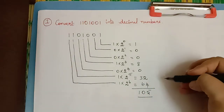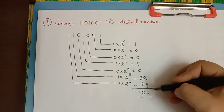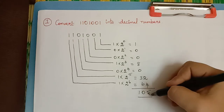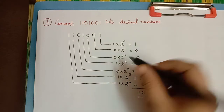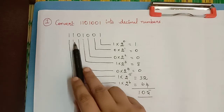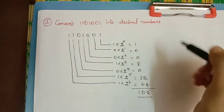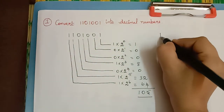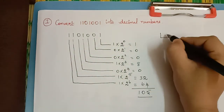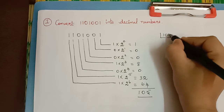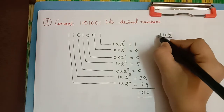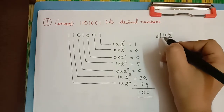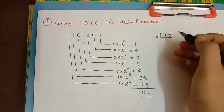Now we shall convert this decimal number back into a binary number, and we shall check whether we get the same binary number. So now let us take 105 and keep on dividing it by 2.